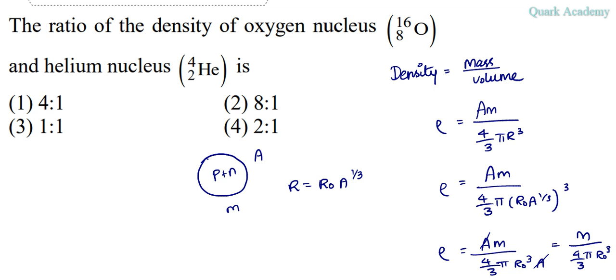So everything is constant. There is nothing to do with mass number or atomic number. So all the nuclei are going to have the same nuclear density. So it is independent of mass number.